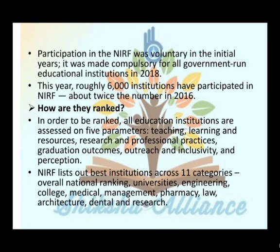To be ranked, all educational institutions are assessed on five parameters: Teaching, Learning and Resources; Research and Professional Practices; Graduation Outcome; Outreach and Inclusivity; and Perception. NIRF lists the best institutions in 11 categories: Overall National Ranking, University, Engineering, College, Medical, Management, Pharmacy, Law, Architecture, Dental, and Research.